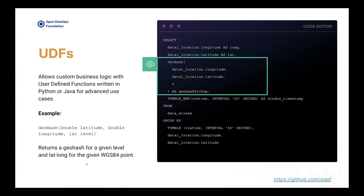For cases where SQL is not enough, another way to do feature transformation is through UDFs. Data scientists can come and define their logic either in Python or Java as a user-defined function, and then use that function within their SQL. One example we have is GeoHash, which takes latitude and longitude and converts it into a GeoHash. This function can be defined by any data scientist and used by any of them — it becomes a central pool of reusable user-defined functions, which focuses a lot on reusability of transformation logic.